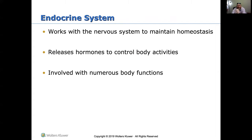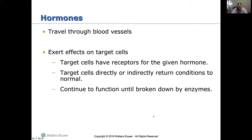The endocrine system works with the nervous system to help maintain homeostasis — the body working as it should, keeping blood pressure, blood sugar, and other things in balance. It releases hormones to control body activities and has a lot of influence on many body functions. Hormones travel through blood vessels and exert effects on different target cells, which have receptors for each given hormone. They target cells directly or indirectly to return conditions to normal — either causing a change or stopping something. Hormones continue to function until they're broken down by enzymes.